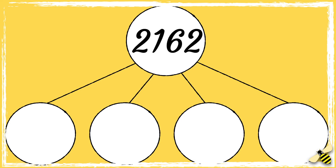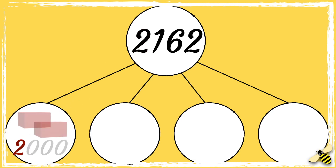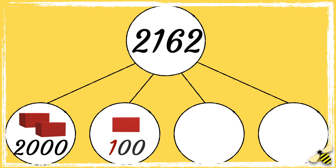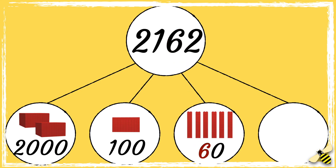Two thousand one hundred and sixty-two has two thousands, one hundred, six tens, and two ones.